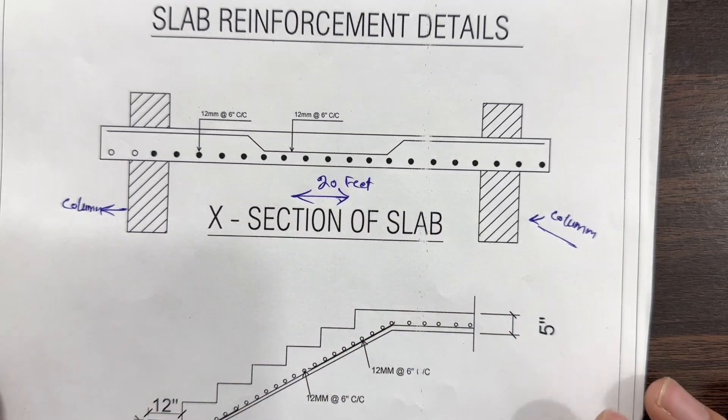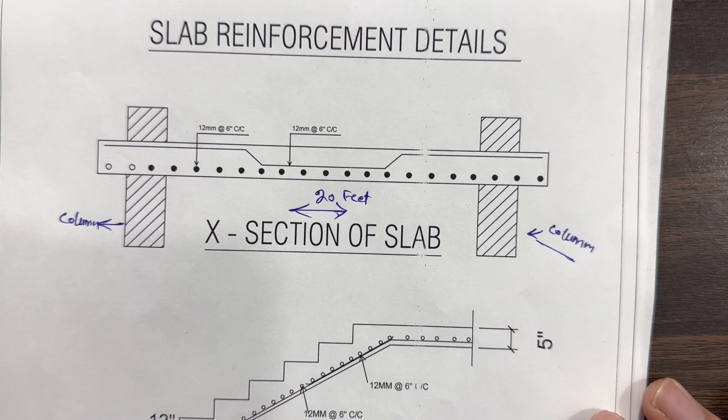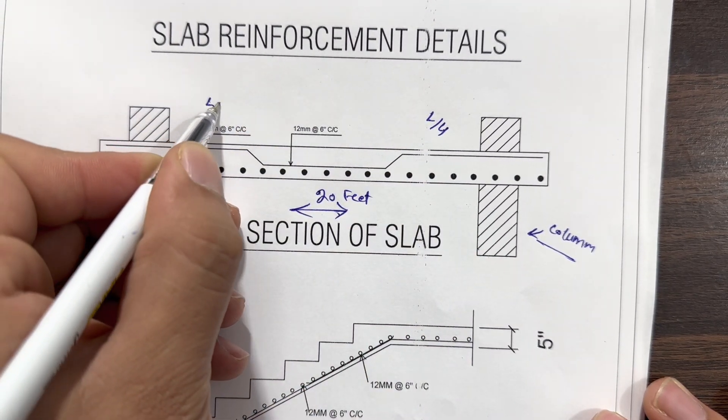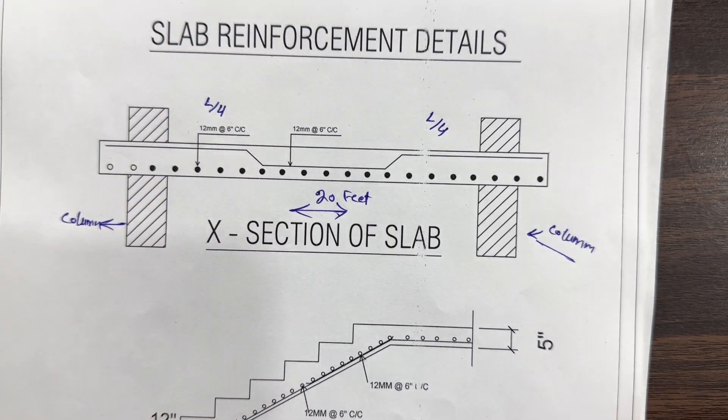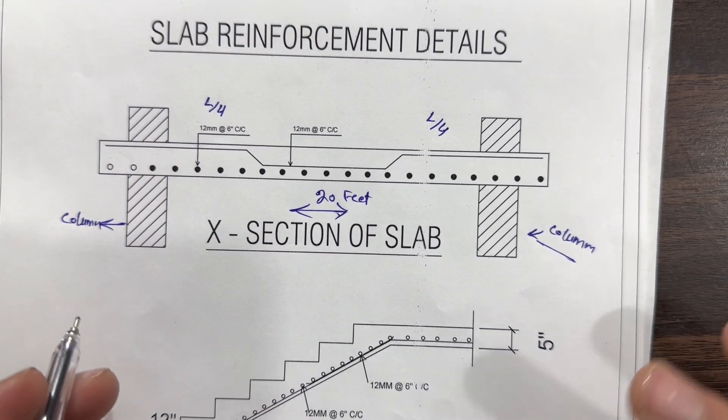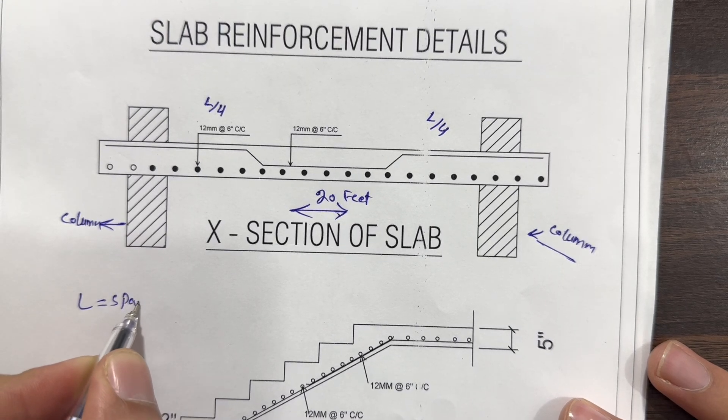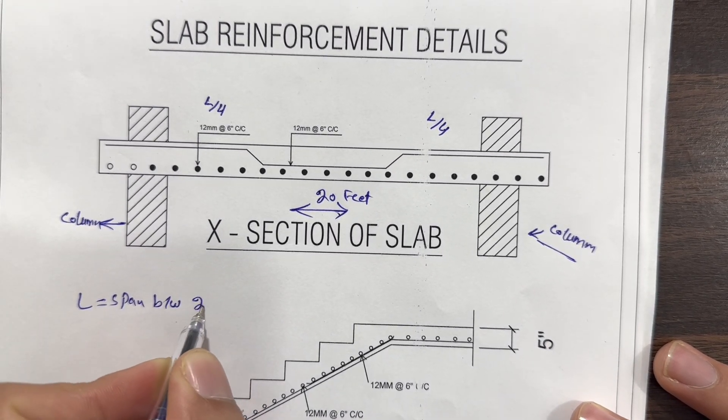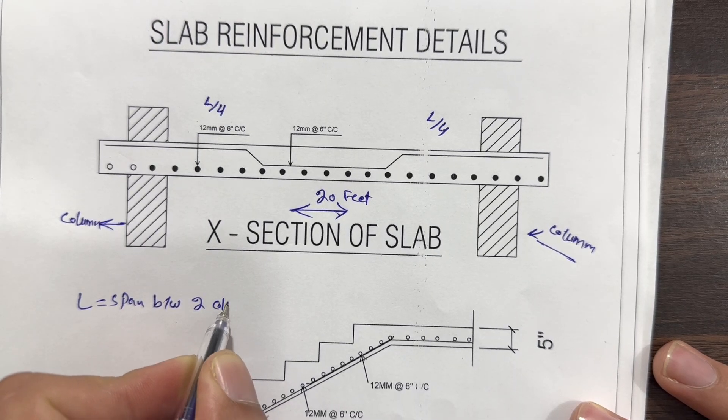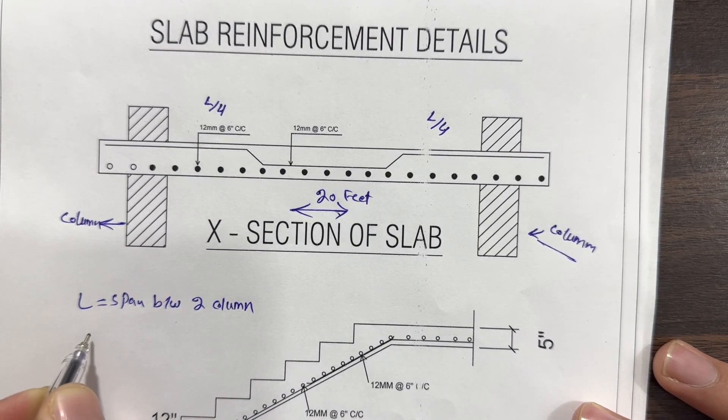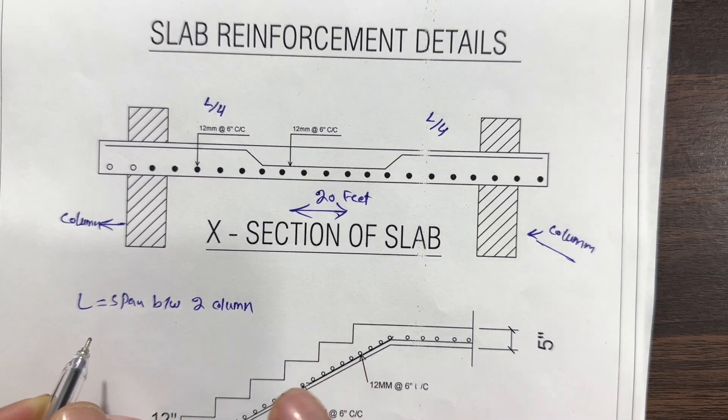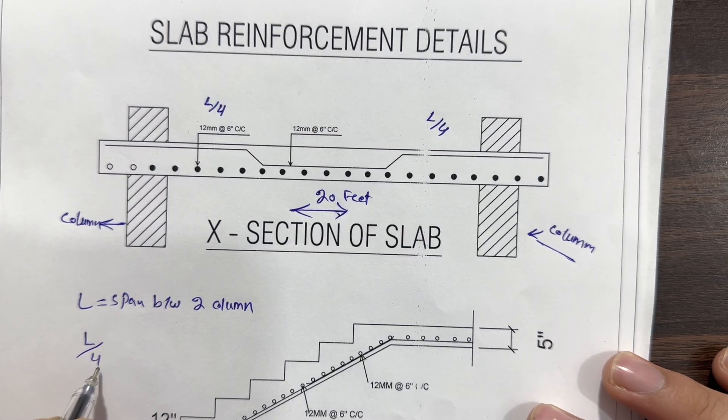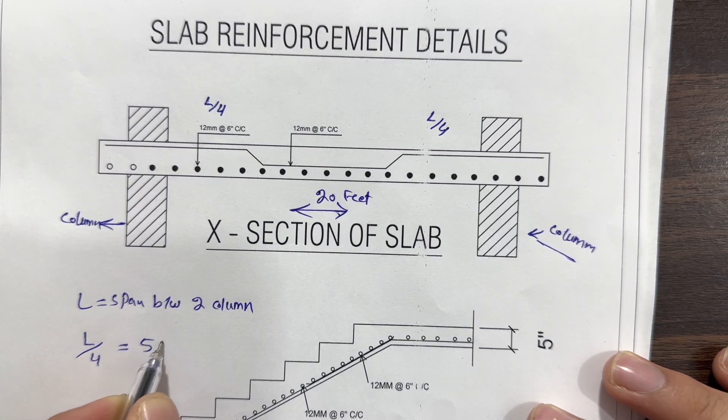So if the span between two columns is 20 feet, here we have L by 4 at this side and L by 4 at this side. L by 4 means L is the span between two columns. So the total span which is about 20 feet, divided by 4. So L by 4 means this is 5 feet.